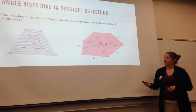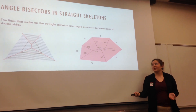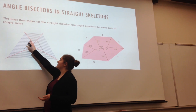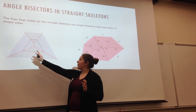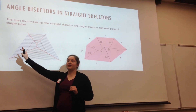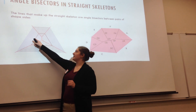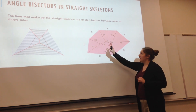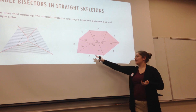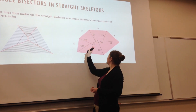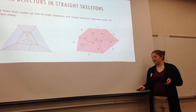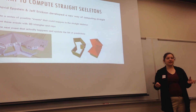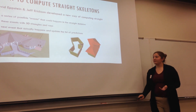One major thing we have to observe in order to implement this with a computer is angle bisectors. Every straight skeleton is just a series of angle bisectors. Each one of these lines is a bisector of a pair of edges — for example, this line bisects these edges, and this other line bisects these two edges. This allows us to use a new method for computing straight skeletons, because the shrinking approach, while easy to understand, is very hard to implement computationally.